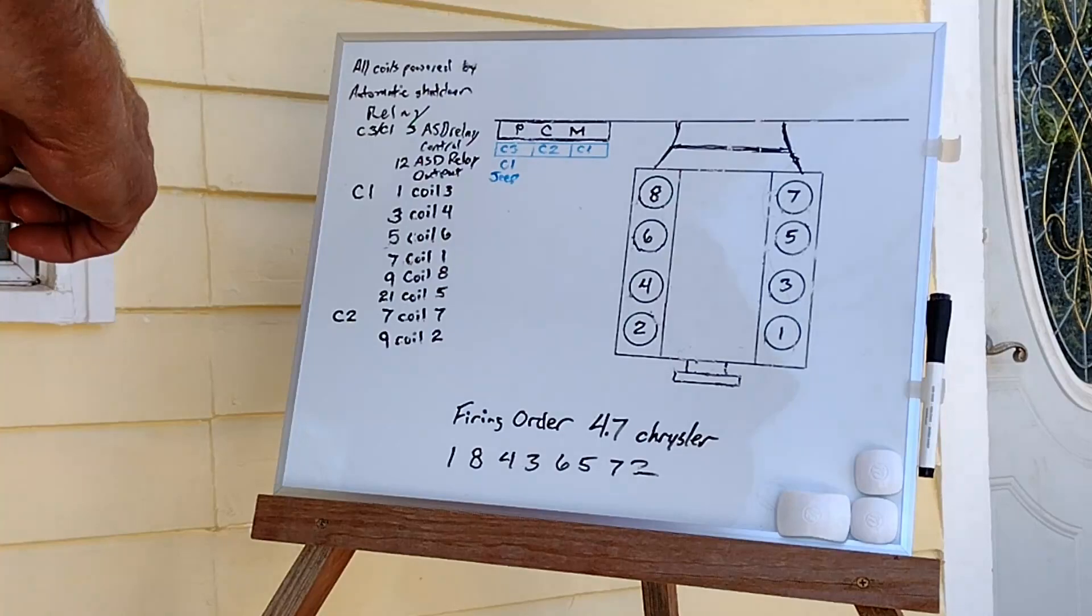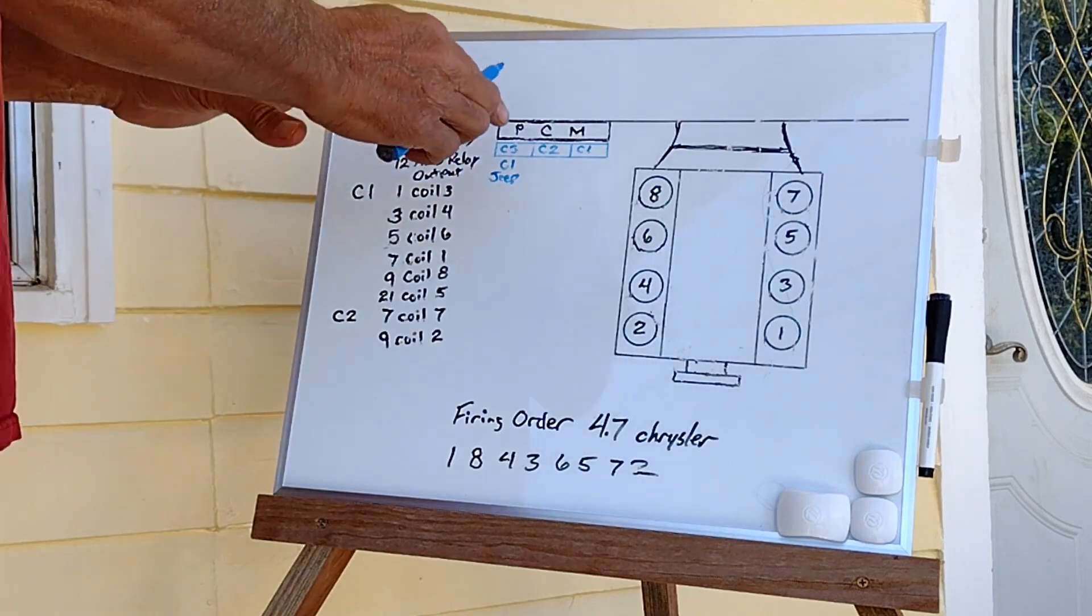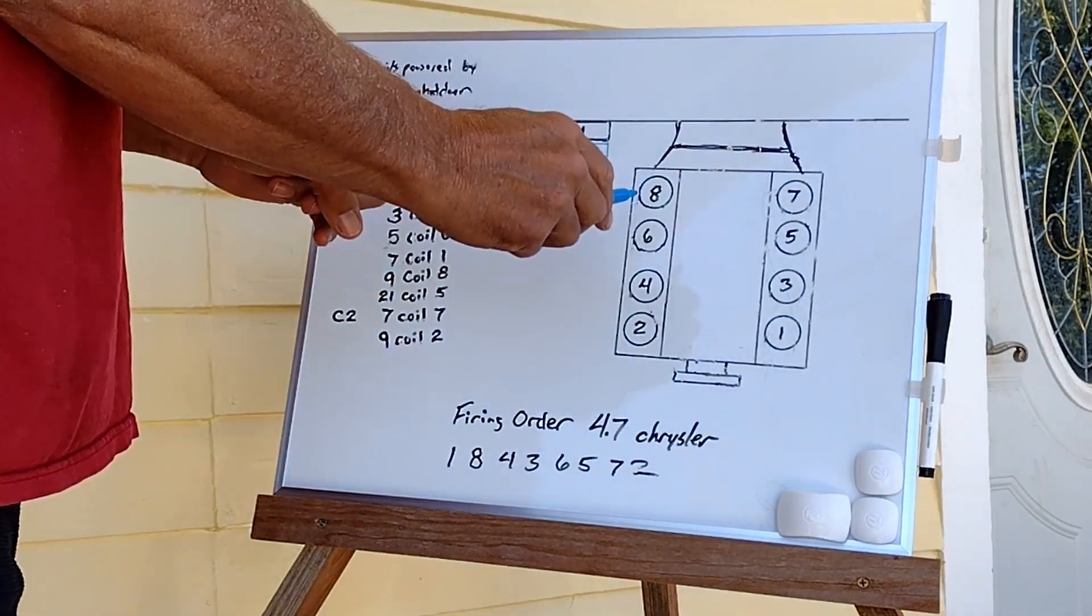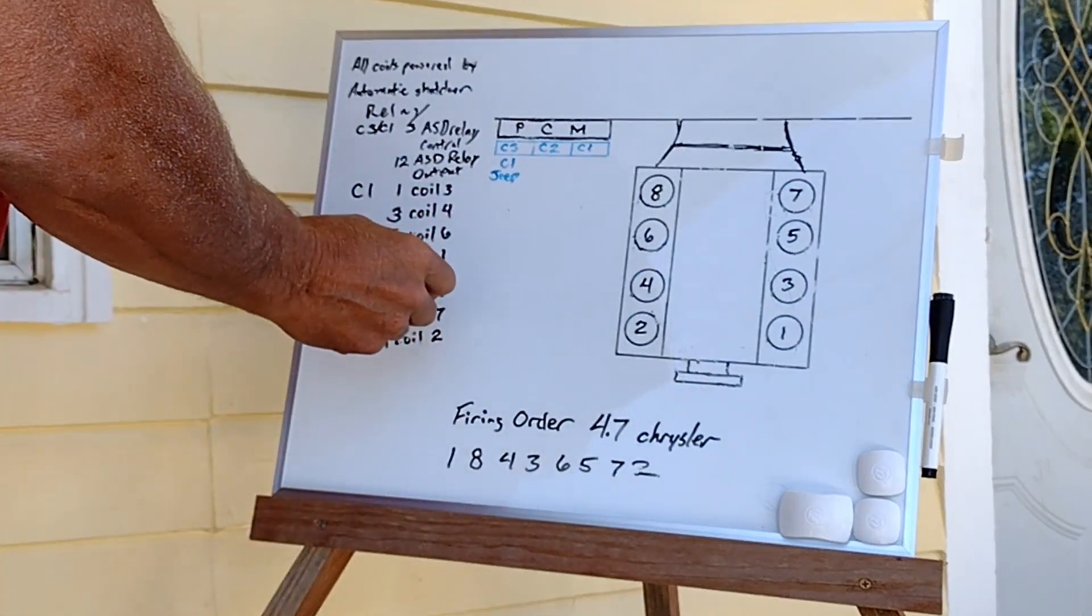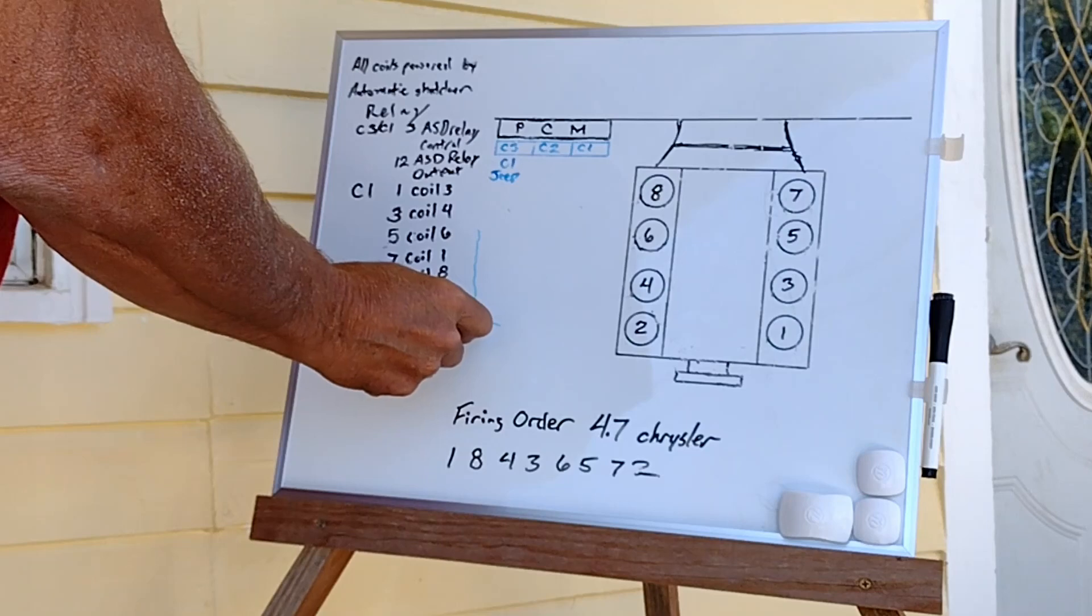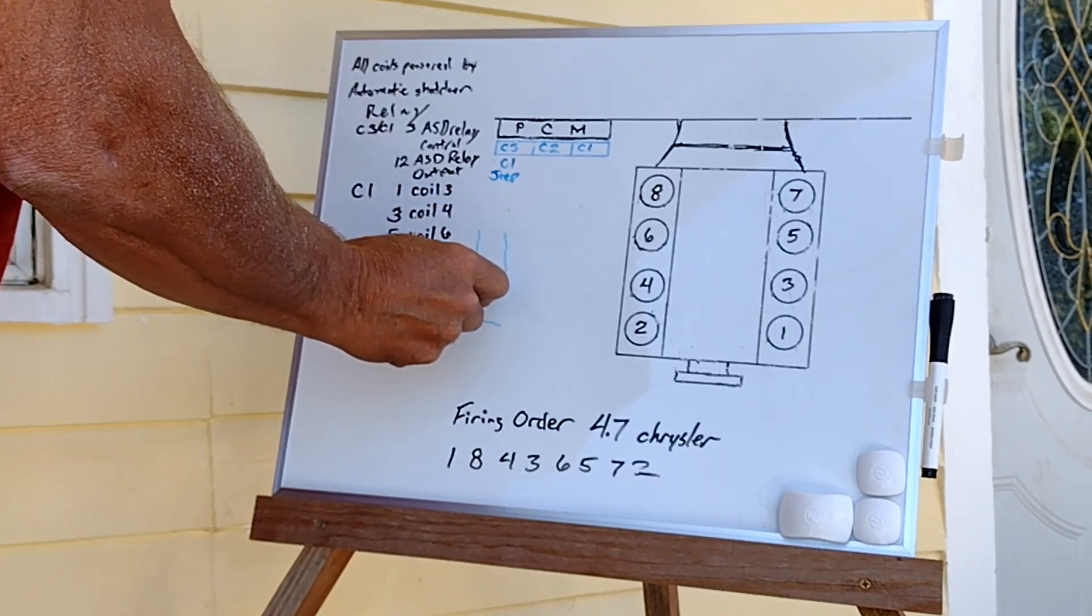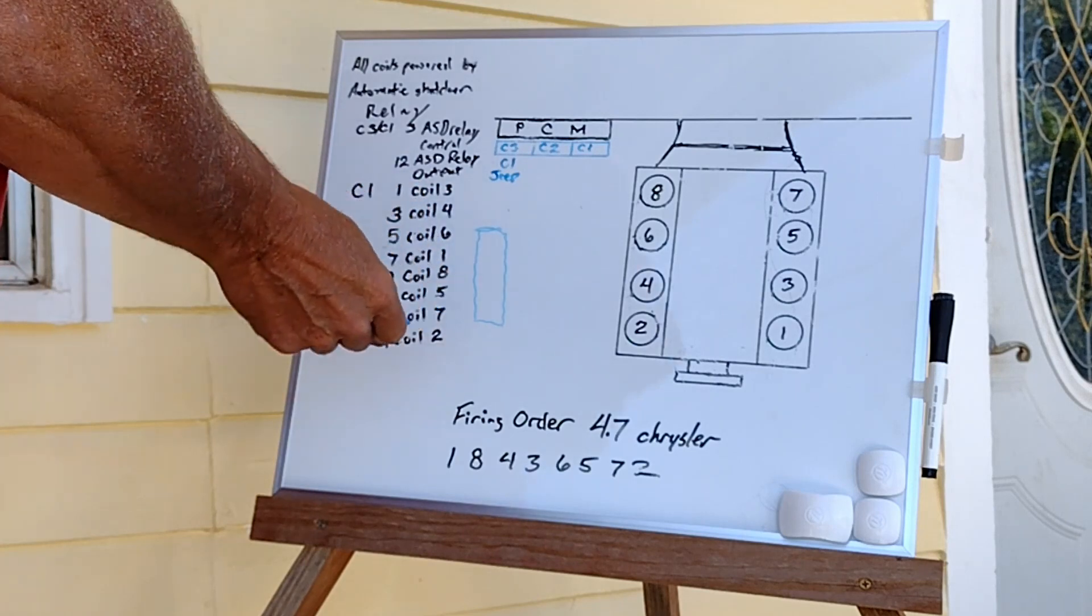In building your wiring harness, it's best to have the PCM in place on the firewall and the engine mocked up in the engine bay. At this point, ignore all of your wiring that goes to your power distribution center, which is your fuse box.